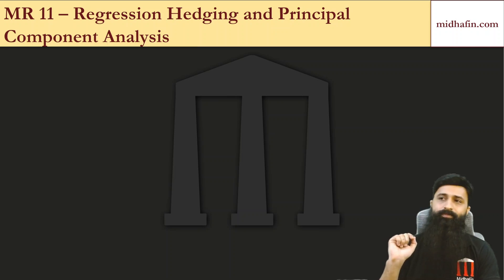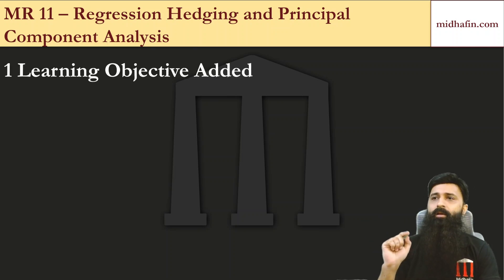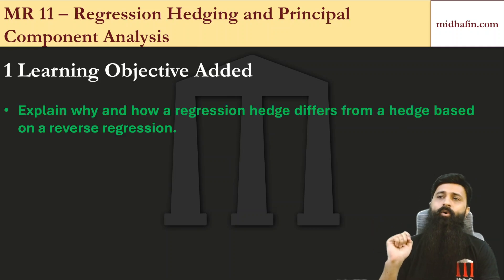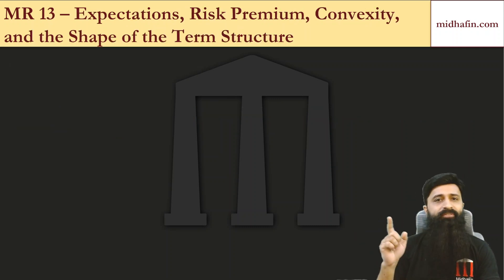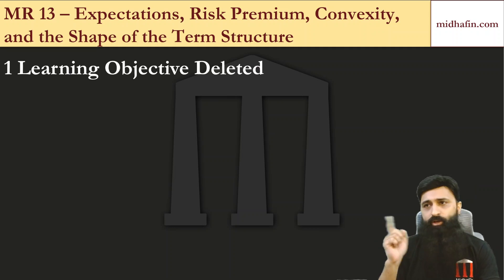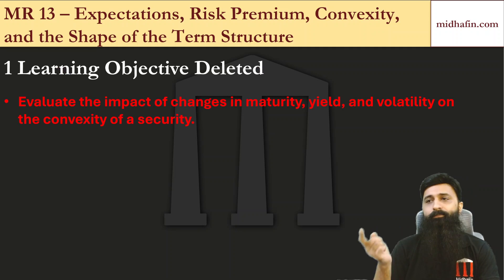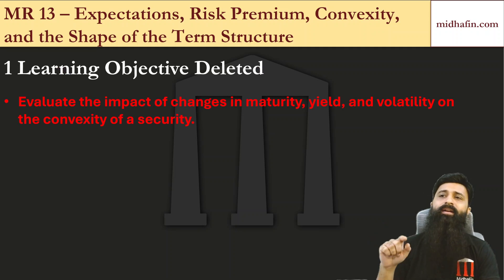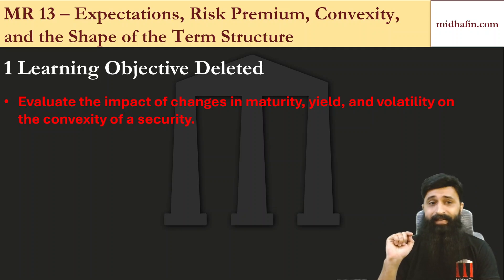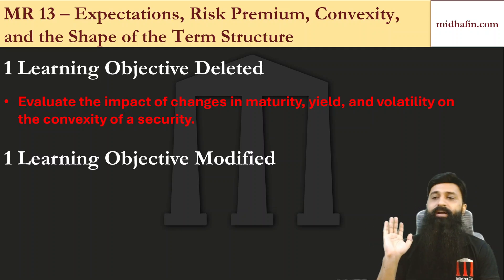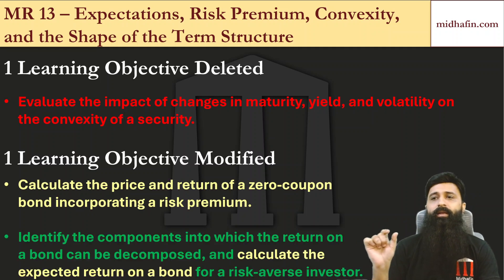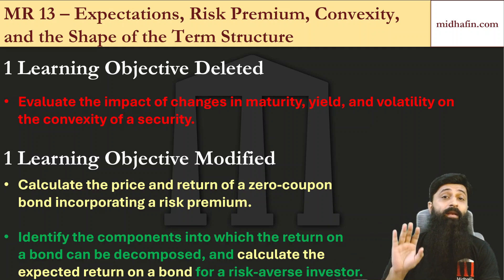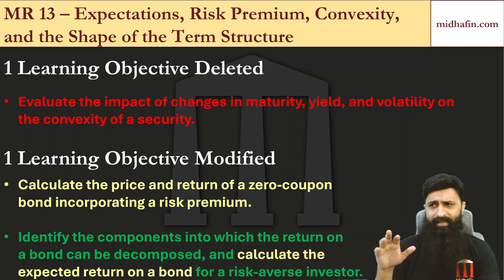In MR11, Regression Hedging and Principal Component Analysis, one learning objective has been added: 'Explain why and how a regression hedge differs from a hedge based on a reverse regression.' In MR13, one LO has been deleted — 'Evaluate the impact of changes in maturity, yield and volatility on the convexity of a security.' One LO has also been modified: previously 'Calculate the price and return of a zero coupon bond incorporating a risk premium,' it now asks you to 'identify the components into which return can be decomposed' and to 'calculate the expected return on a bond for a risk averse investor.'